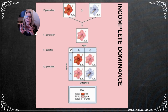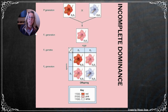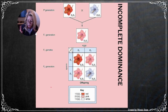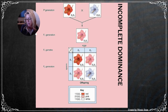Incomplete dominance is another exception to the rule. A red flower (R1 R1) crossed with a white flower (R2 R2) does not produce all red or all white offspring, but an intermediate pink color — the hybrid R1 R2. If you cross two pink flowers, you get: one out of four red (R1 R1), two out of four pink (R1 R2), and one out of four white (R2 R2).